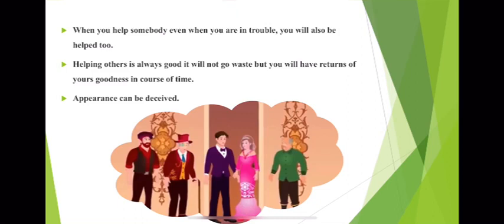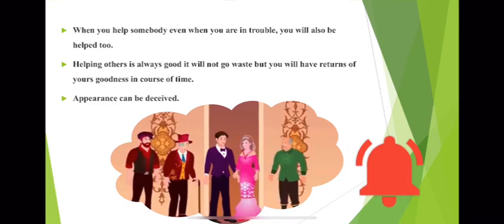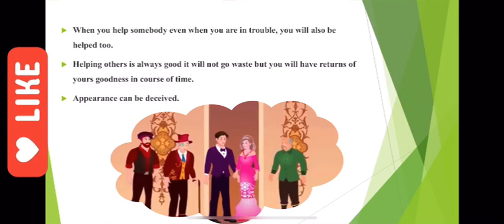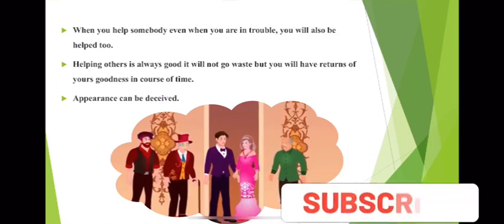So, dear friends, we have seen The Model Millionaire by Oscar Wilde. Some questions that can be asked on this short story include: Write a note on the character of Hughie Erskine; How can appearances be deceiving; Write a detailed note on the short story The Model Millionaire. I am thankful to everyone for listening to this video lecture. The link to the test will be updated in the description box. If you like this video, hit the like button. You can share this video. Thank you.